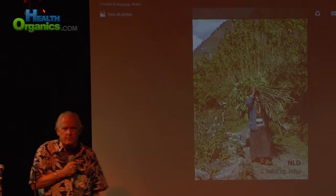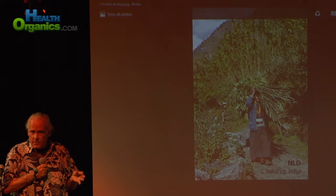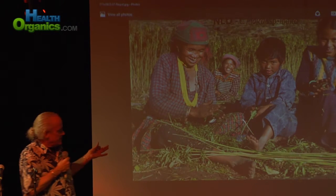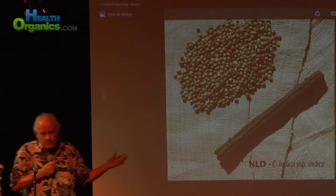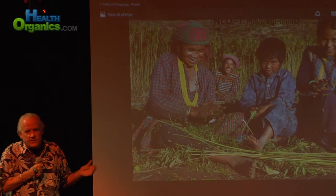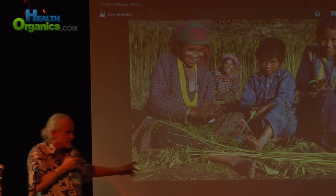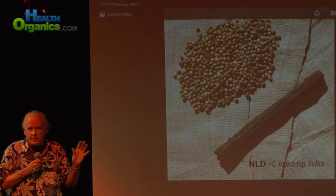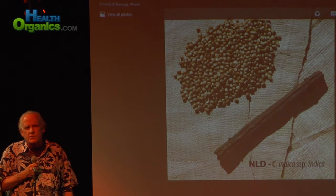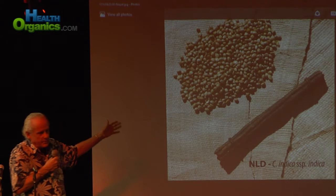This is Nepal — an example of a place where a standing crop of cannabis is used for all three major products: seed for food, fiber for clothing and rope, and a drug product — hashish, charas — hand-rubbed hash. Three generations of women are rubbing the seeds out to eat later, collecting the resin on their hands, and saving the stalks to extract fiber. This is probably the model seen around the world when subsistence farmers used cannabis.